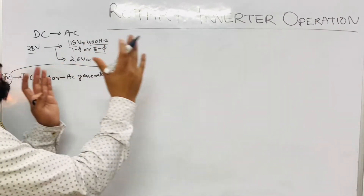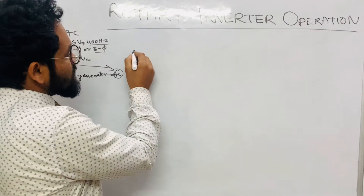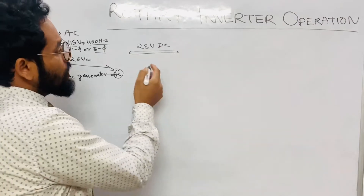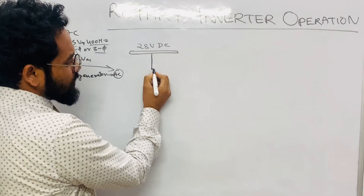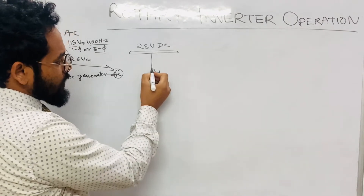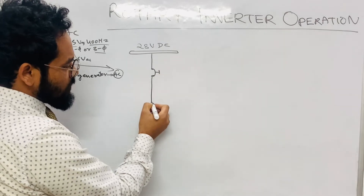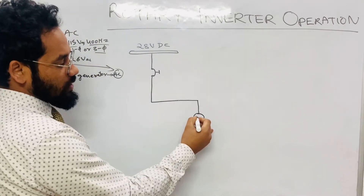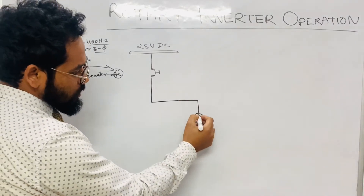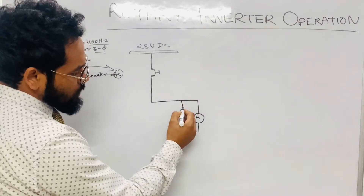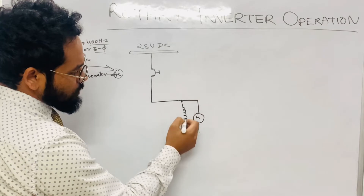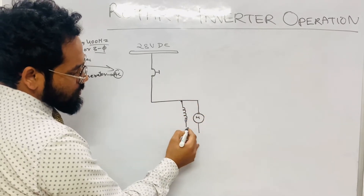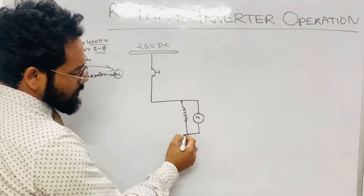Let me explain this using a schematic circuit diagram. Suppose this is the 28 volt DC supply coming from the batteries. There will be a switch connected here. When you press the switch, the supply is given to a DC motor — labeled M. The supply goes to the armature of the DC motor and there will also be the field winding of the motor. Both the field winding and armature will get their grounding path from the circuit.